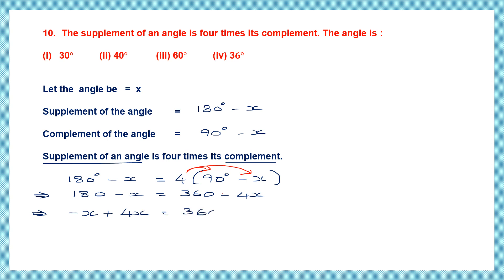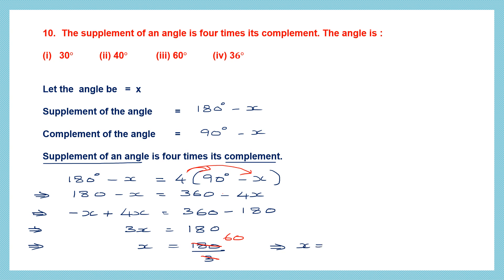So 3X equals 180. Therefore X equals 180 divided by 3, which is 60 degrees. The angle is 60 degrees — that is option 3, 60 degrees. With this, children, we come to the end of our exercise. Thank you.